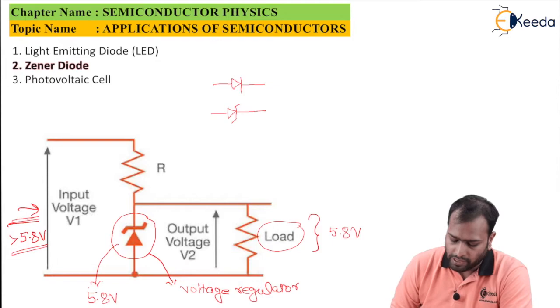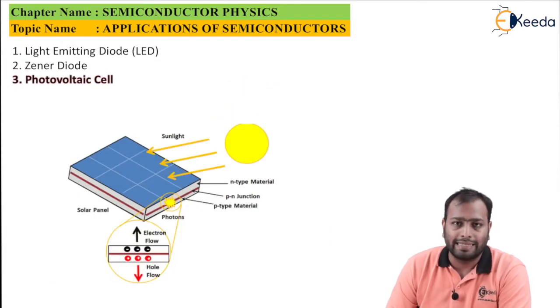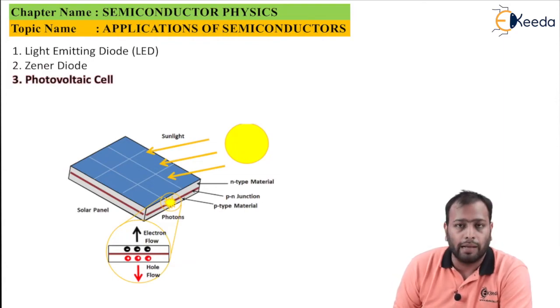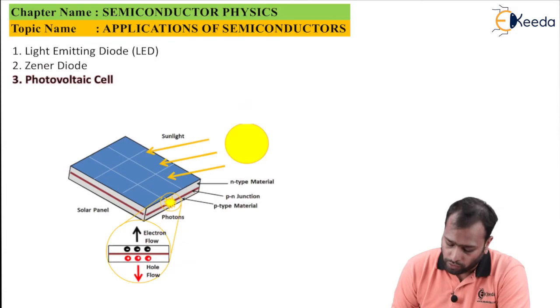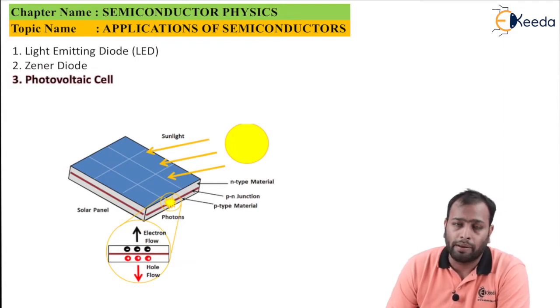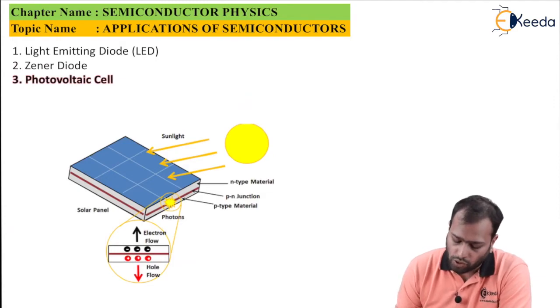Now the next application is photovoltaic cell, which is nothing but a technical name for a solar cell. It is a film which absorbs the sunlight or the photons and then with these photons the electrons and holes are recombined which leads to the flow of electricity.